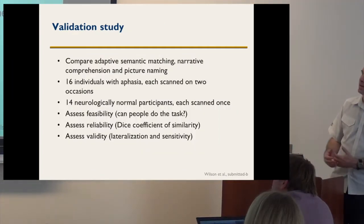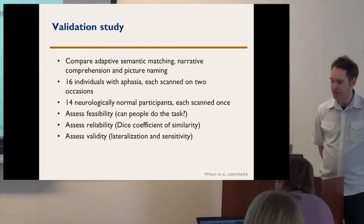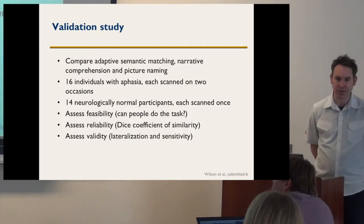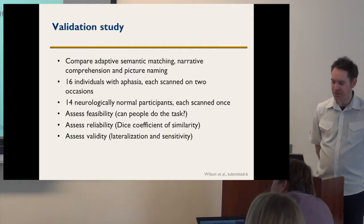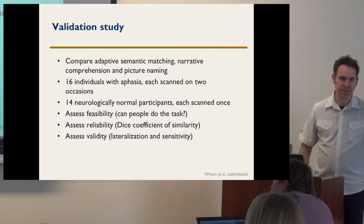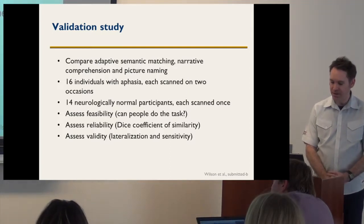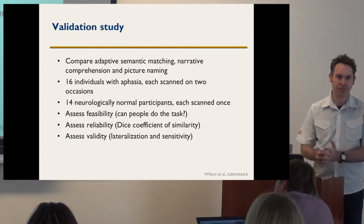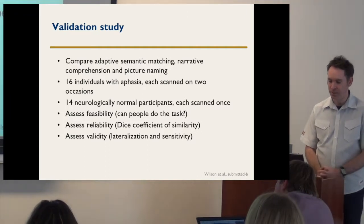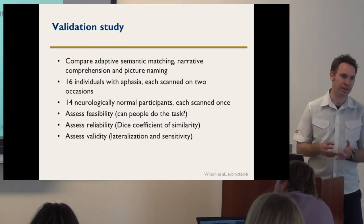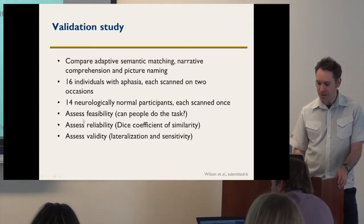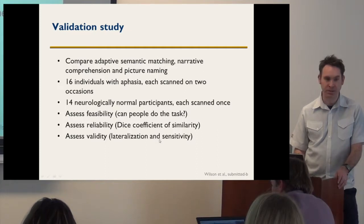Now I'm going to describe how we validated it. We wanted to compare the adaptive semantic matching task to narrative comprehension and picture naming — two of the most widely used paradigms in neuroplasticity studies — in terms of feasibility, reliability, and validity. We had 16 people with aphasia recruited from a community aphasia group, scanned each twice about two weeks apart to determine test-retest reliability. We also had 14 neurologically normal participants scanned once — we were more interested in using them to determine validity, i.e., whether we can reveal known features of language organization: lateralization and involvement of left frontal and posterior temporal regions.